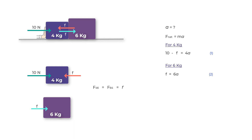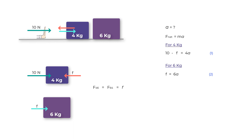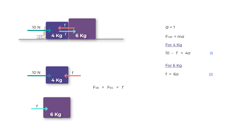If the 6 kilogram mass had greater acceleration it would run away from the 4 kilogram mass and there would be no interaction. If its acceleration were less, it would crash into the 4 kilogram mass. So both masses move with the same acceleration A, and the whole system moves with the same acceleration. Adding the two equations and solving gives A = 1 m/s². Substituting back into equation 2, we find the interaction force F = 6 newtons.